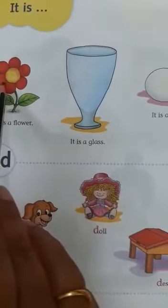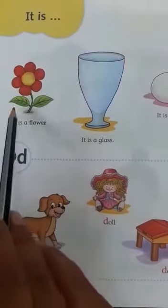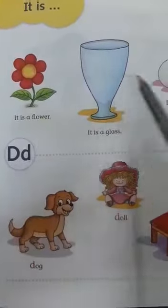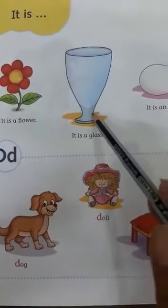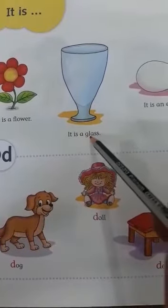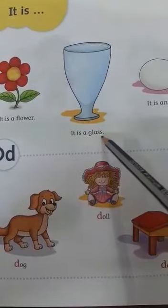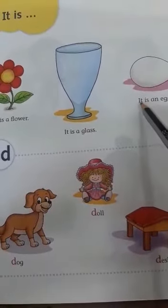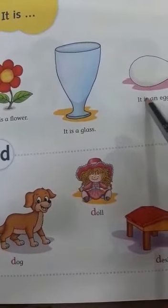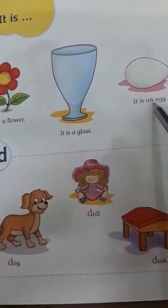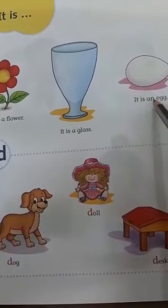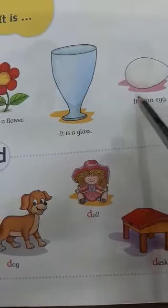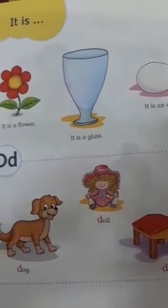Flower — what is it? It is a flower. Glass — what is it? It is a glass. Egg — what is it? It is an egg.